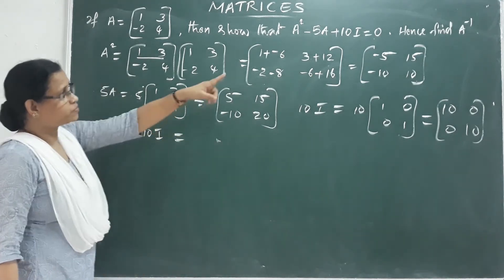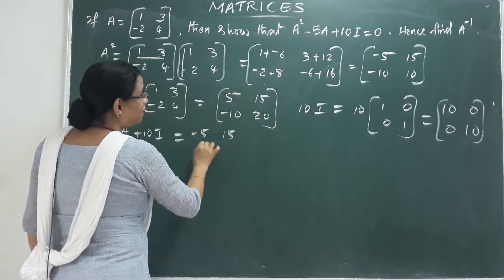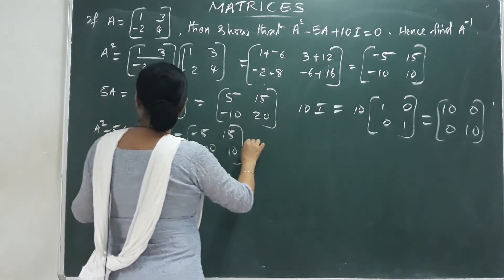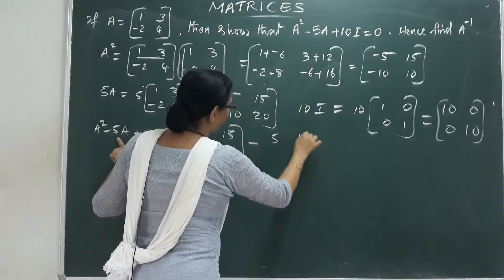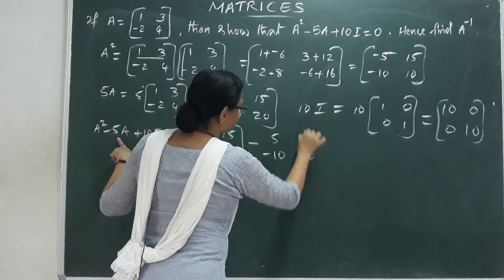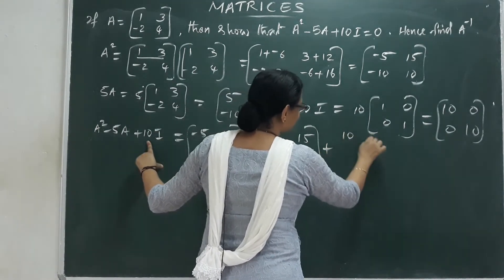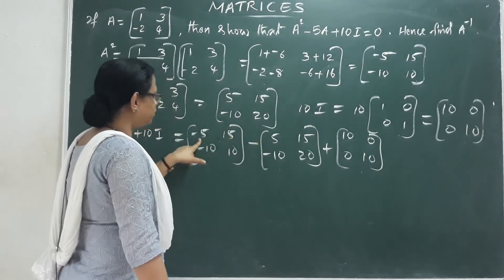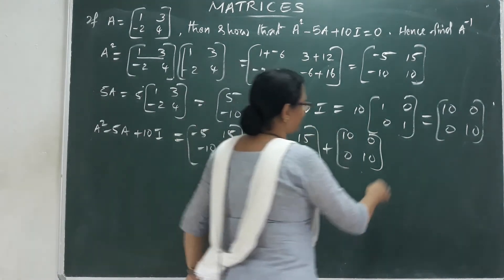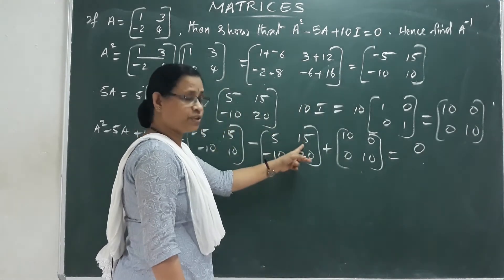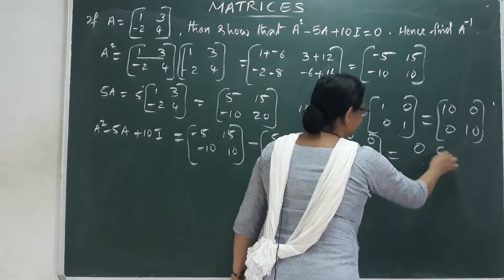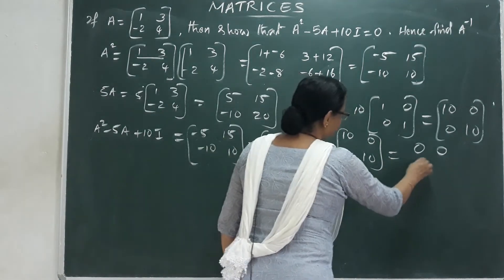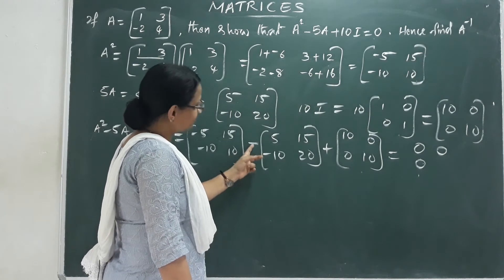This is equal to A squared minus 5A plus 10I. Computing: -5 - 5 + 10 = 0. Then 15 - 15 + 0 = 0. Then -10 + 0 + 10 = 0. And 10 - 10 + 10... minus 10 plus 10 equals 0.